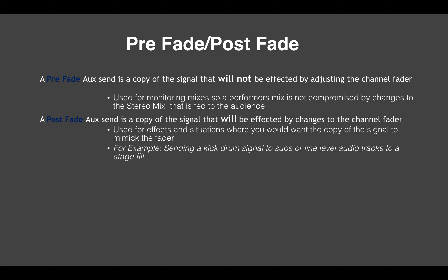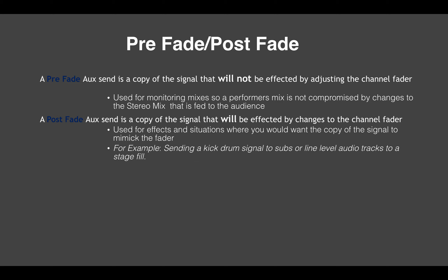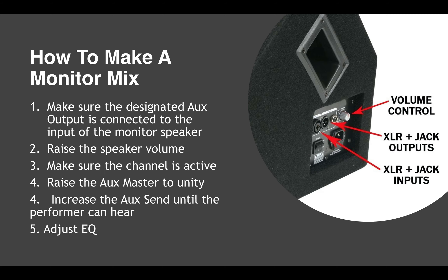There are two types of auxes. There's a pre-fade aux and a post-fade aux. A pre-fade aux is a copy of the signal that will not be affected by making changes to the channel. We like to use these for monitor mixes because we don't want a performer's mix to be compromised by changes we make to the actual mix that we feed the audience. A post-fade aux is a copy of the signal that will be affected by changes to the channel fader. We like to use these on effects in situations where you'd want the copy of the signal to mimic the fader's moves.